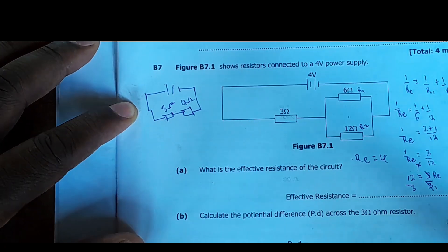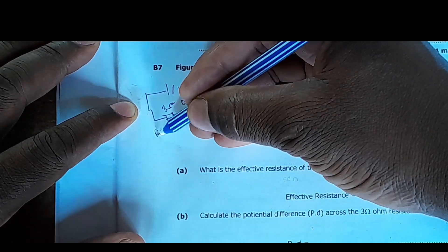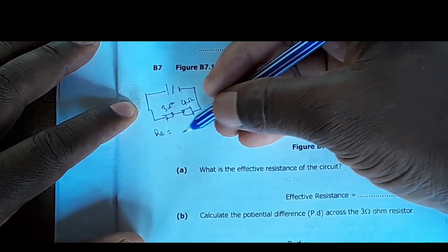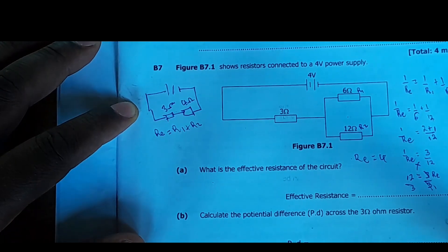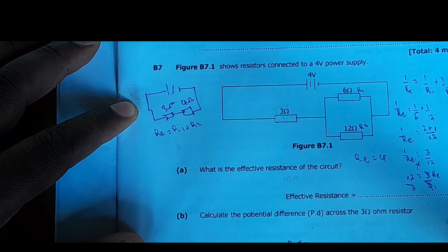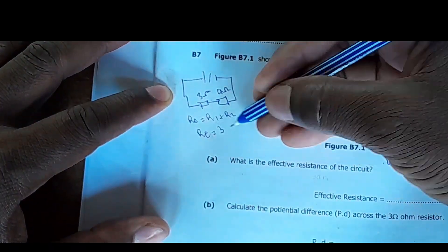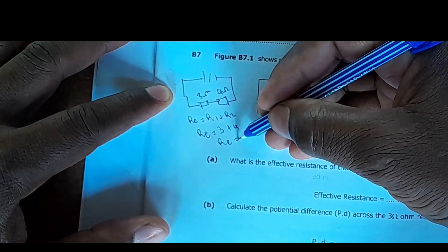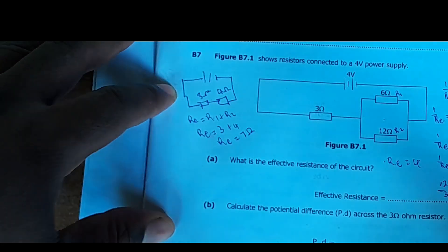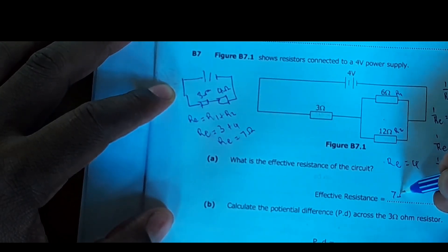For resistors connected in series, we find total resistance by simply adding them: Re equals R1 plus R2. So the equivalent resistance equals 3 plus 4, which gives us an equivalent resistance of 7 ohms.